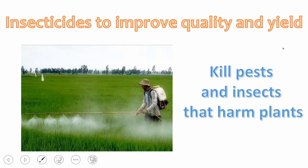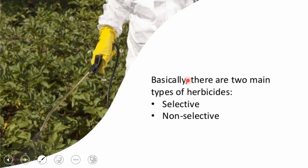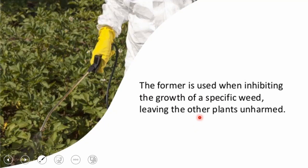A cousin of insecticides are herbicides. Herbicides inhibit the reproduction and growth of weeds — the unwanted plants that live beside our crops and compete with them for nutrients and water from the soil. Herbicides are of two types: selective and non-selective. Selective herbicides kill only the weeds, leaving our crop plants unharmed.